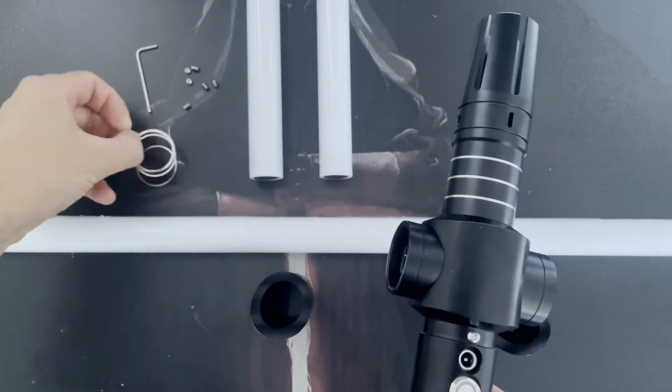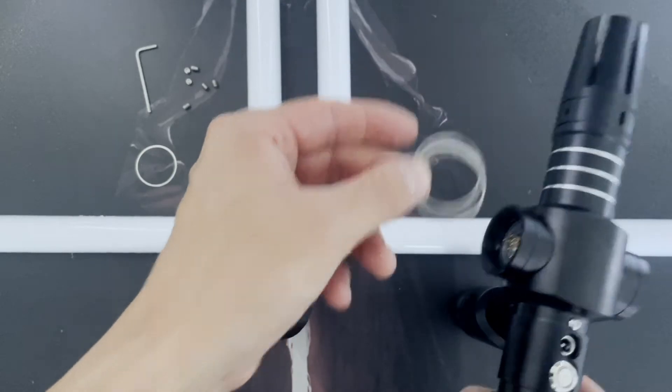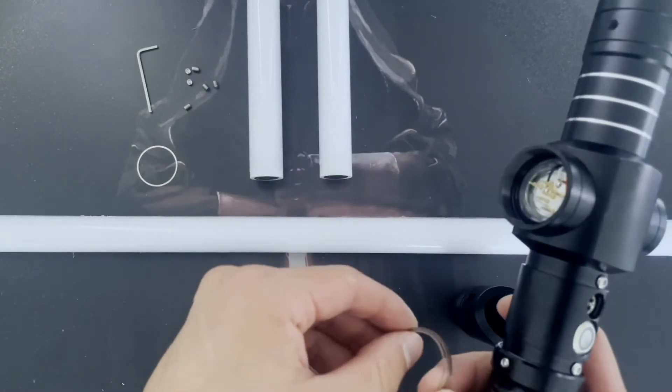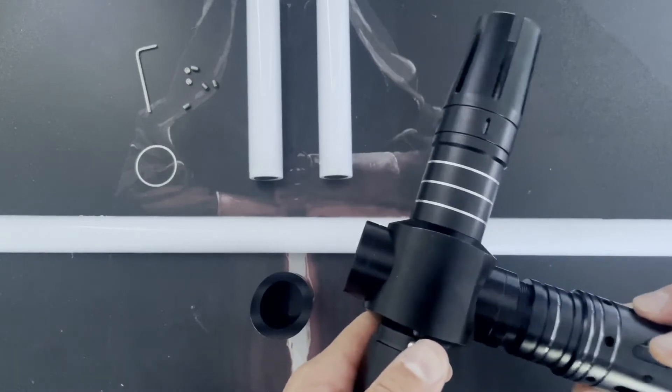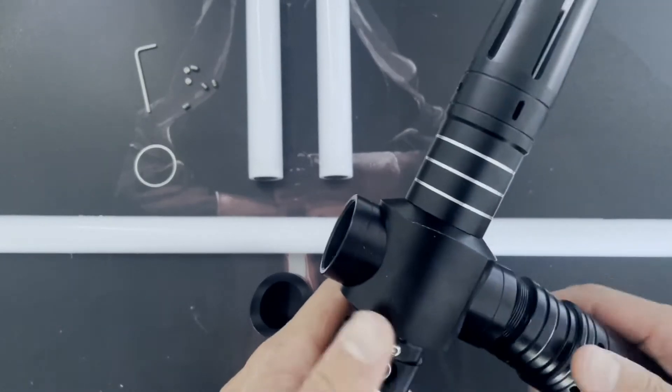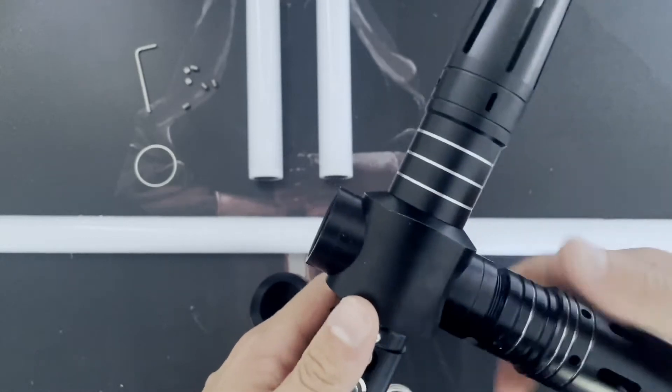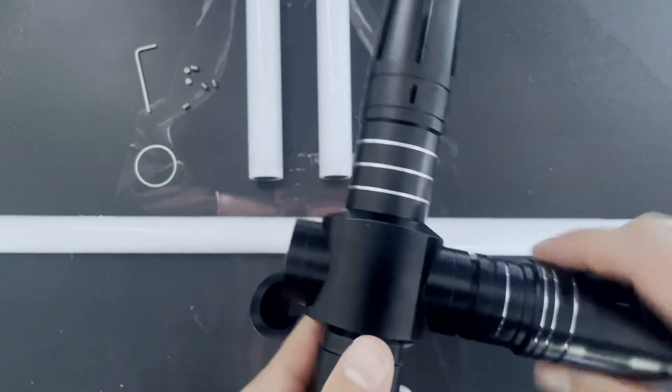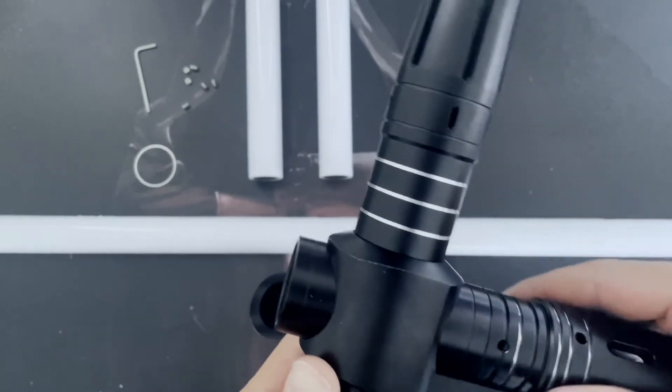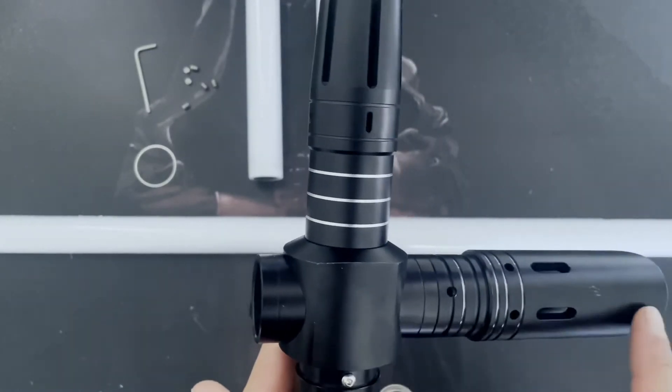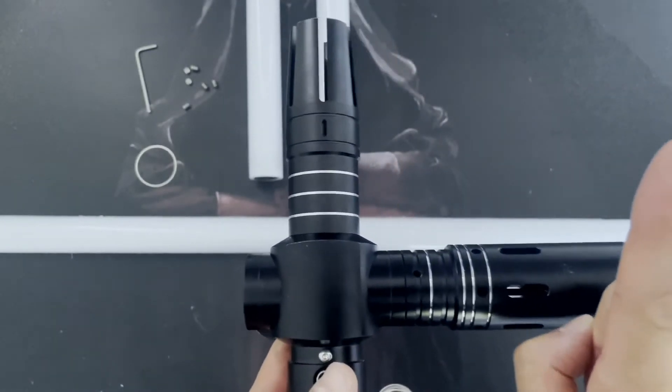So to line these two side emitters up, what we're going to do is put a couple of these metal rings on, these metal washers. What this will do is space them off slightly so you start to line up. I'll show you one side.